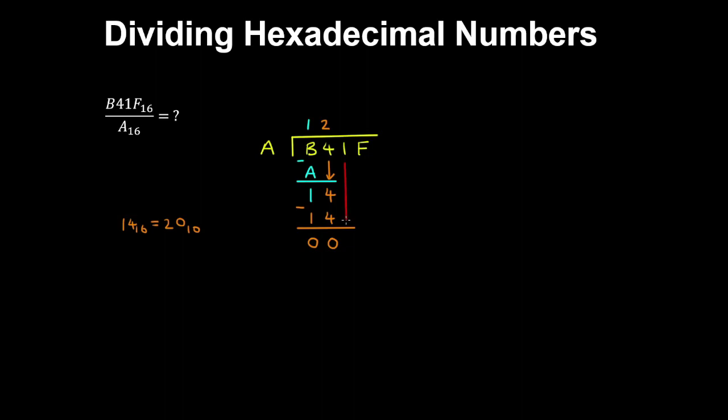And now we bring down the 1. And A goes into 1 zero times. Times A is 0. And then subtracting the result again, we have 1.